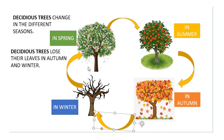This is what happens to the deciduous tree during the four seasons. In spring, it has leaves and flowers. In summer, it has leaves and fruit. In autumn, the leaves change colors — they can be yellow, red, orange, and brown — and they fall to the ground.